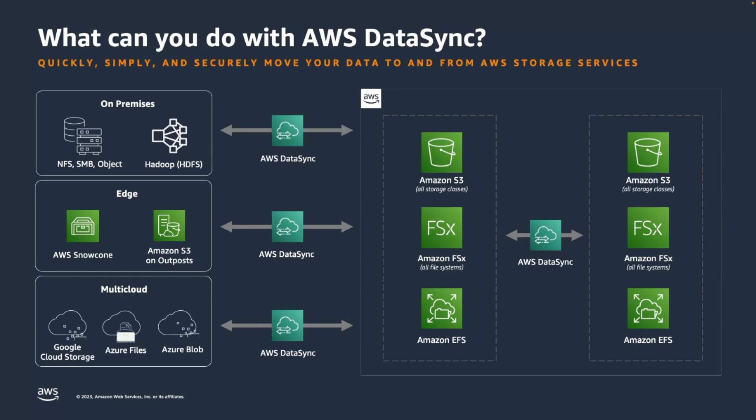DataSync makes it simple to move large amounts of data quickly and securely between on-premises data centers, edge locations, or Outposts environments in AWS. You can also use DataSync to transfer data between your AWS storage. DataSync can copy data to and from your Amazon S3 buckets, Amazon EFS file systems, and all Amazon FSx file system types.